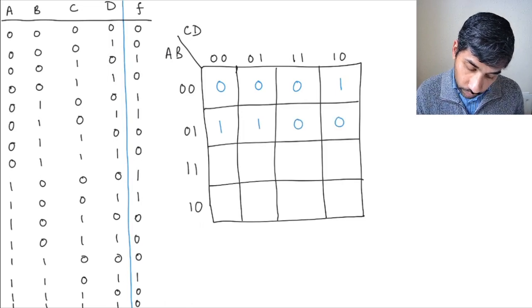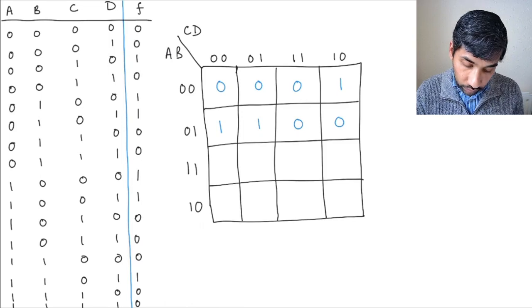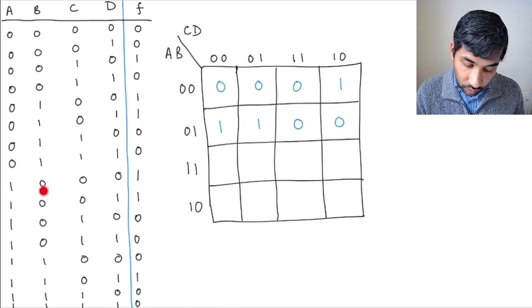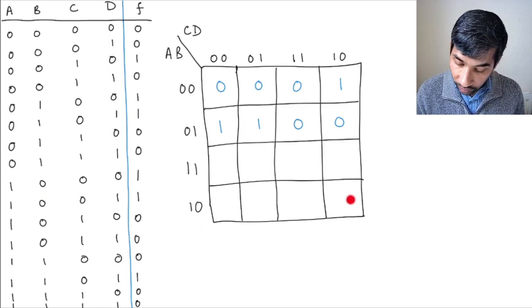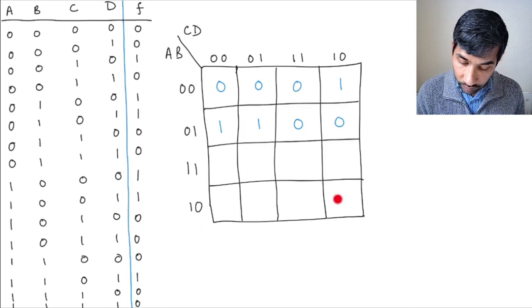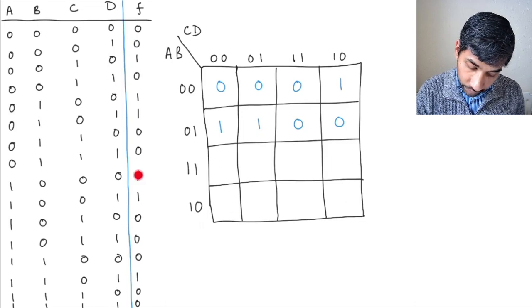And then at this point, we are looking at A and B equal to 1, 0. So you fill up this before you fill up this, so this one. So these values go into this last column.